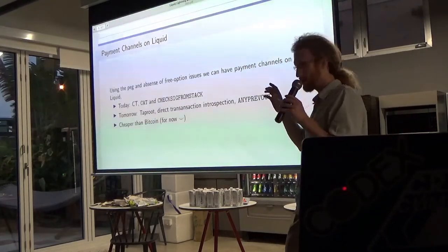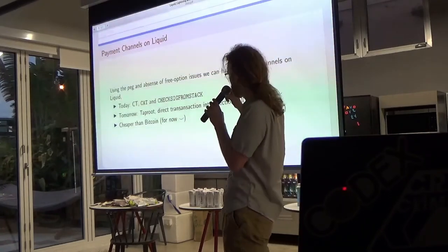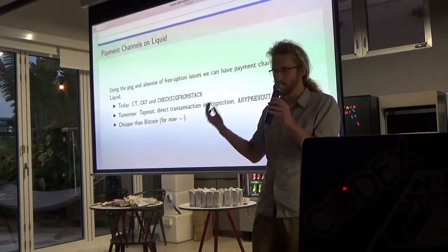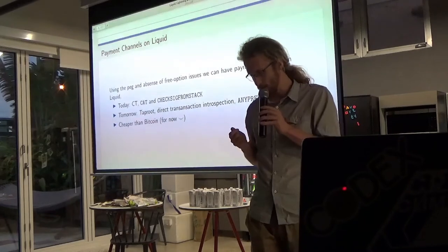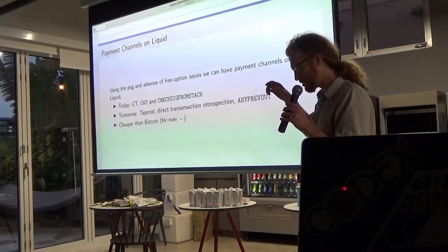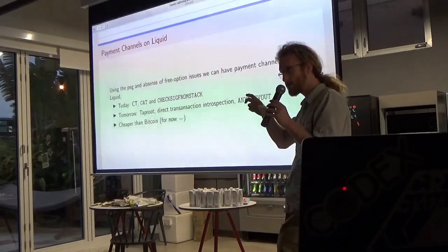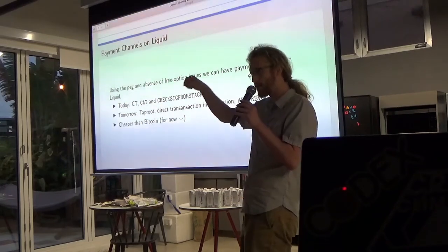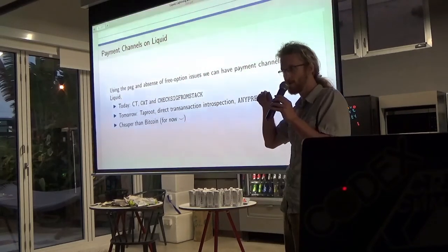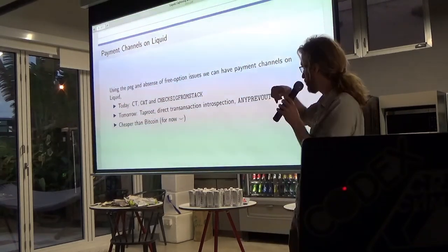Using the peg and the absence of free option issues, you can do swaps easily on Liquid. The generalization of doing swaps between Bitcoin and Liquid is to have payment channels on Liquid that are connected to payment channels on Bitcoin — and now you can have a lightning payment path that goes through Liquid.